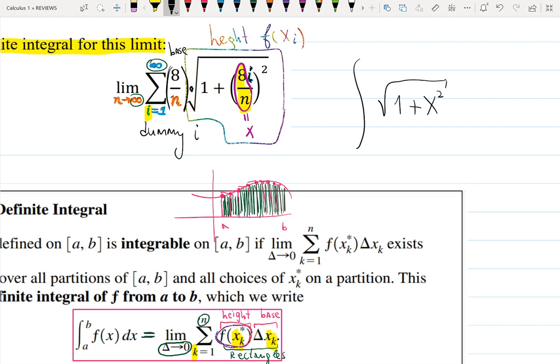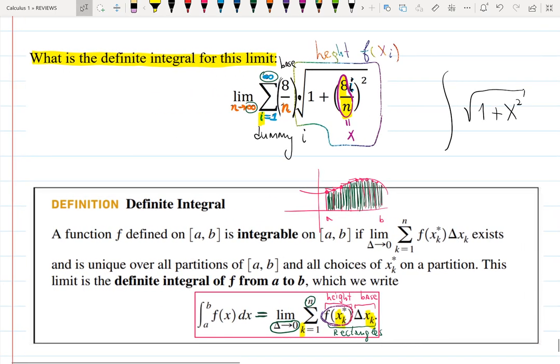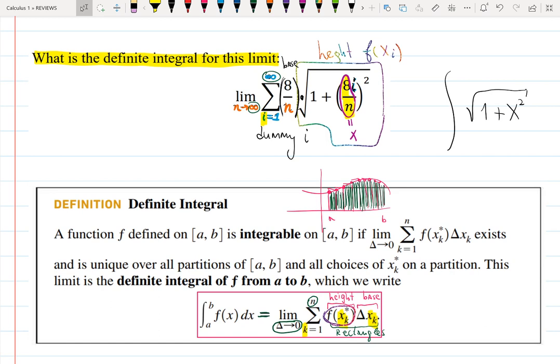8 over n is my base. There's only one thing left in this product, height times base. So the base is 8 over n. What does it mean? If you remember, when we're asking you to use 12 rectangles or a million rectangles, we use the formula b minus a over n. And that gives you delta x. Delta x is basically a step size or a base of each rectangle. So in this case, it's 8 minus 0. That's why you don't see 0 in the formula over n.